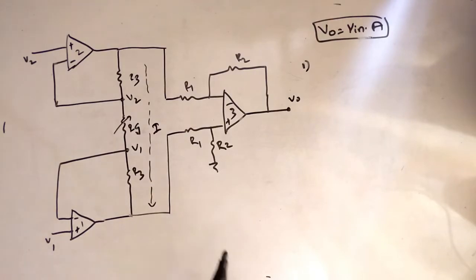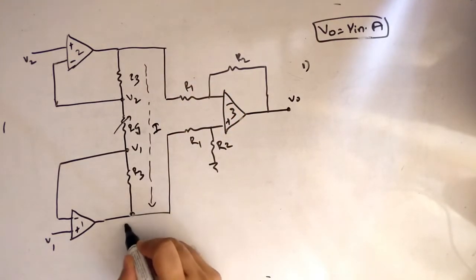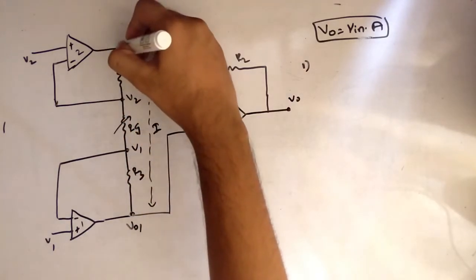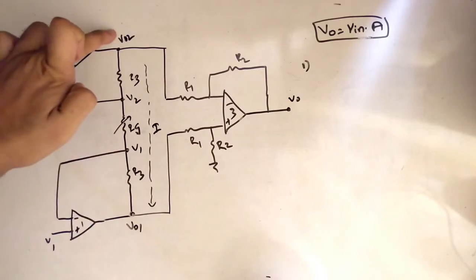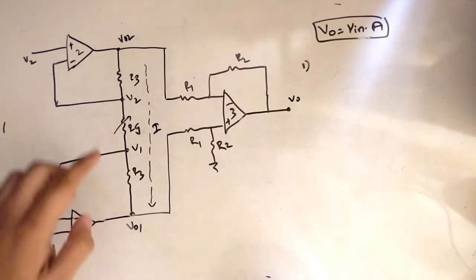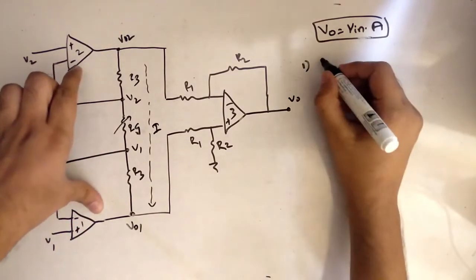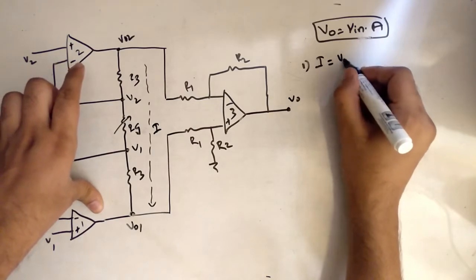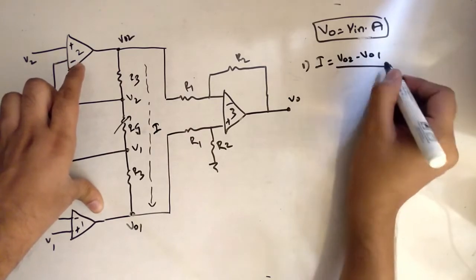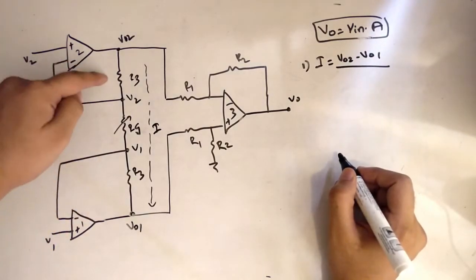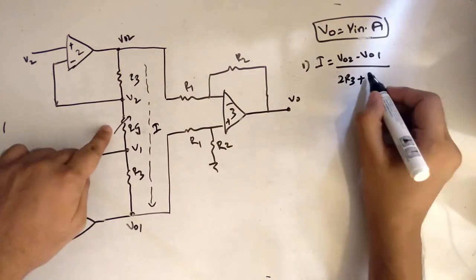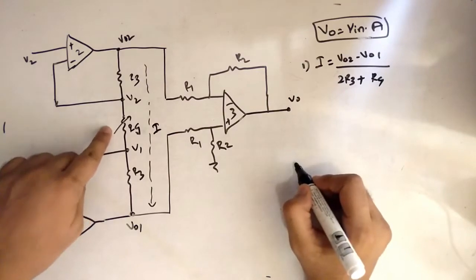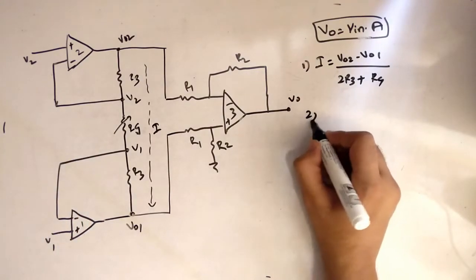First we have to write the equation for current I. You can note that the voltages here are VO1 and VO2. Applying KCL, I is equal to VO2 minus VO1 divided by R3 plus R3, which is 2R3, plus the variable resistance RG. This is the first equation.